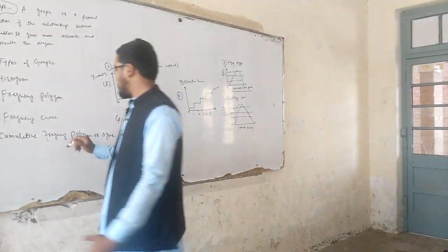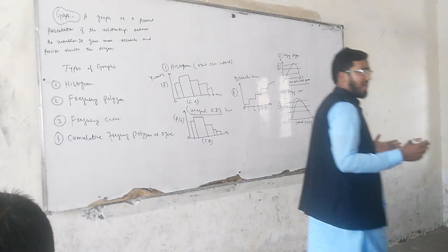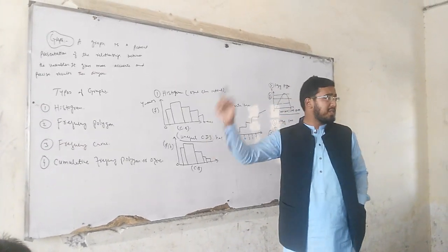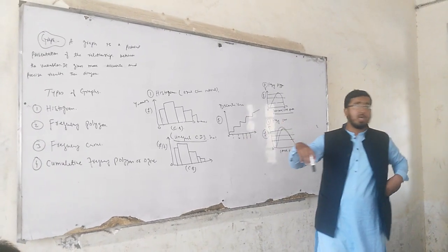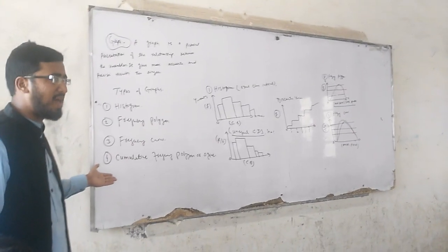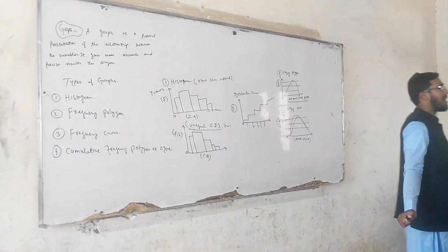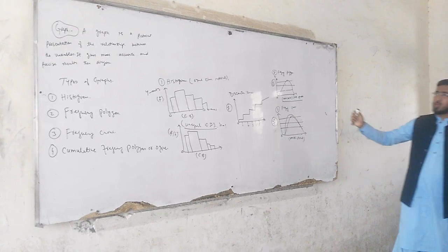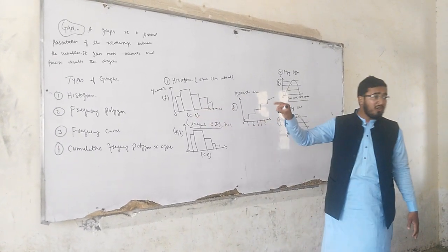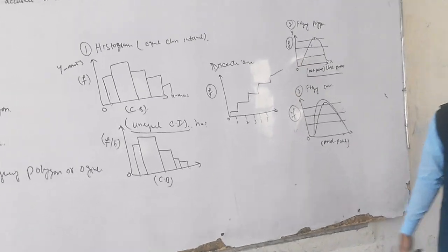In summary, what is the difference between the graph and the diagram? The diagram represents the shape of your data, while the graph gives results that are quite accurate as compared to the diagrams. We have so many types of graphs in statistics, but we will discuss a few: histogram, frequency polygon, and frequency curve. In all graphs and diagrams, we focus on X-axis and Y-axis, because all graphs and diagrams are based on X-axis and Y-axis.